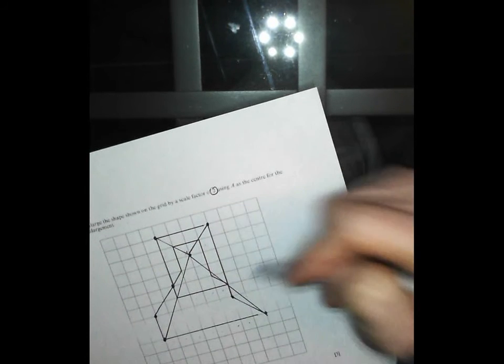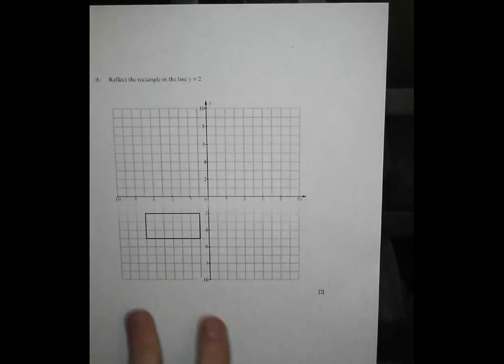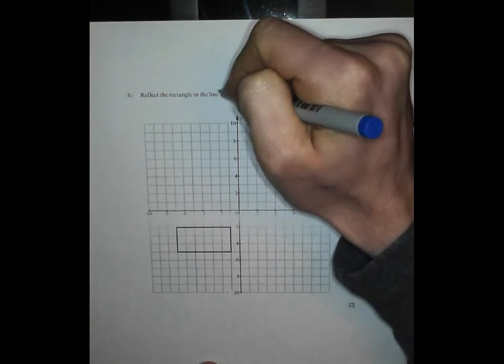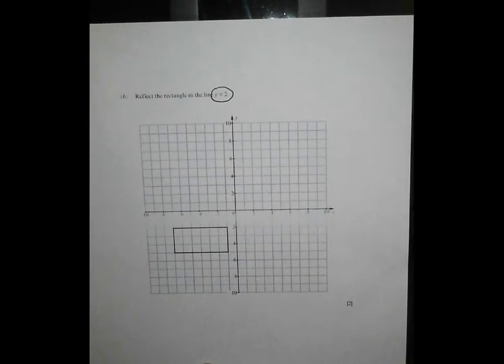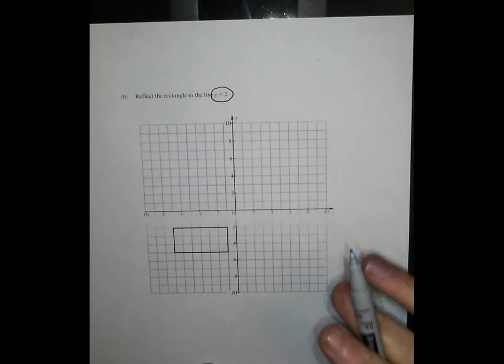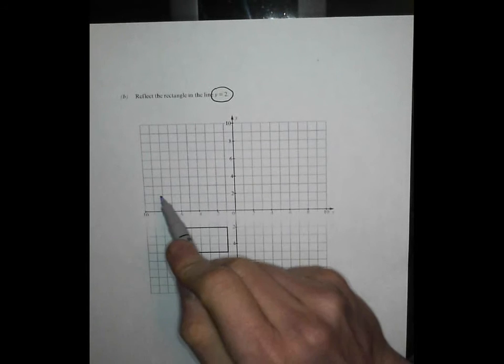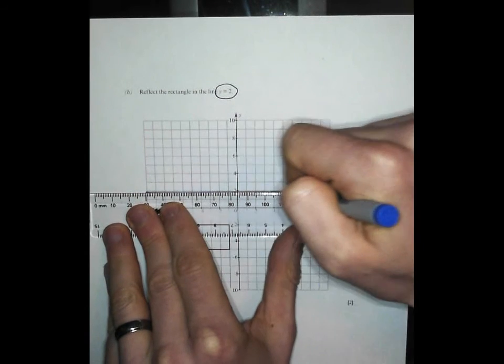So reflect in the line y equals two. Now straight away, if you don't know what y equals two looks like, you're getting this question wrong. Y equals two is a line where every coordinate must have a y coordinate of two. Now don't confuse it with the y axis. Y equals lines are horizontal because every point on this horizontal line here has a y coordinate of two. Sometimes people like to remember that it crosses the y axis at two. Whatever works for you, but you must get your line right first.